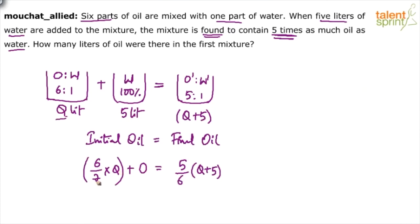(6/7)Q plus zero equals (5/6) times Q plus 5. So (6/7)Q minus (5/6)Q equals... or let's not do fractions and all that. Let us cross multiply. So what do we get? (6/7)Q equals (5/6) into (Q plus 5).